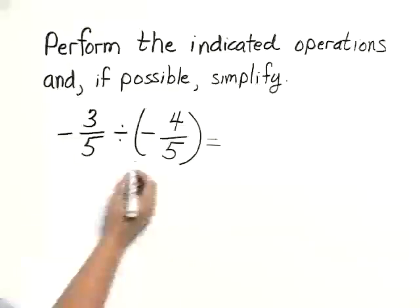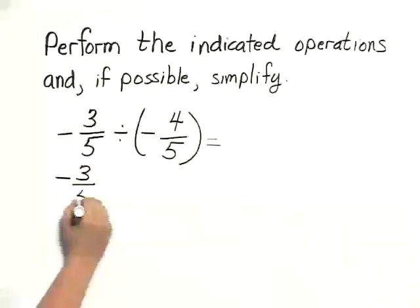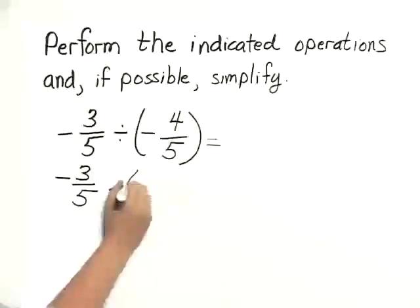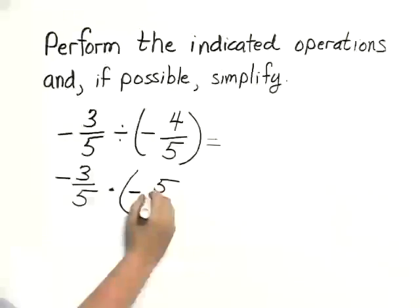So the very first step would be to rewrite this as negative three-fifths times the reciprocal of negative four-fifths, which is negative five over four.